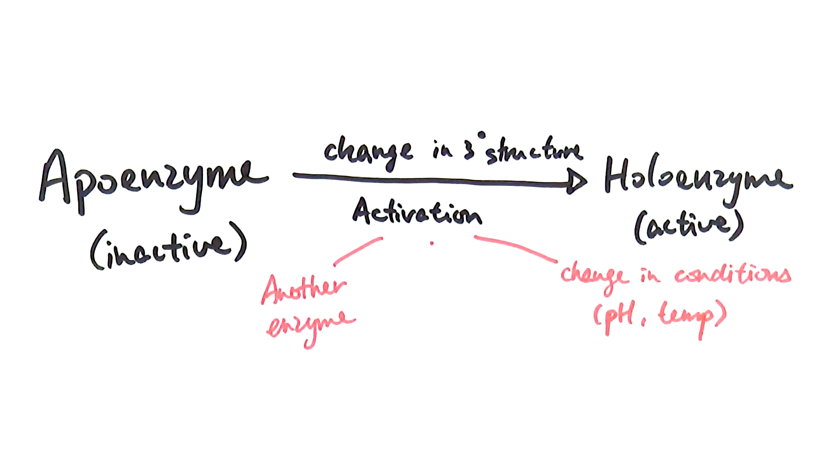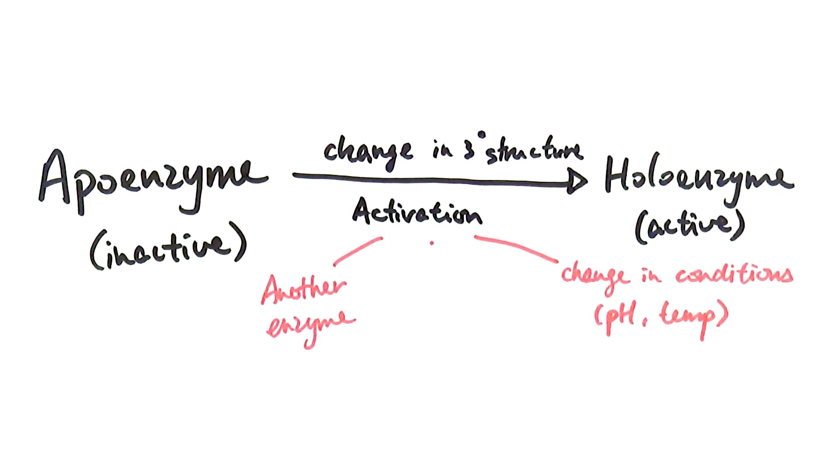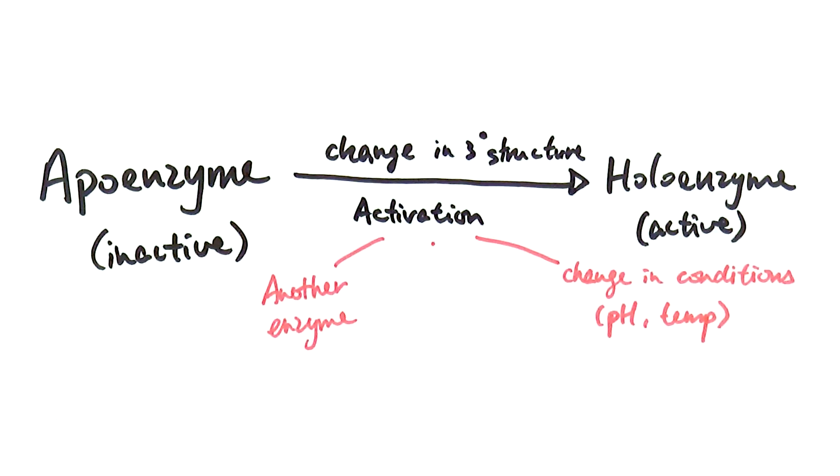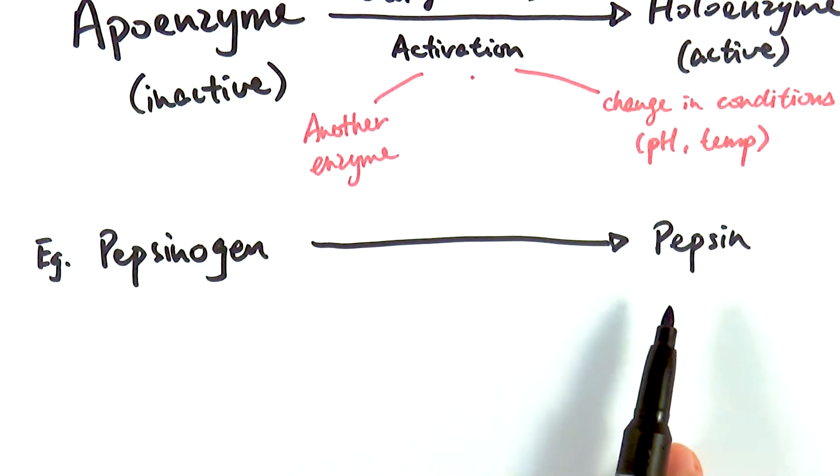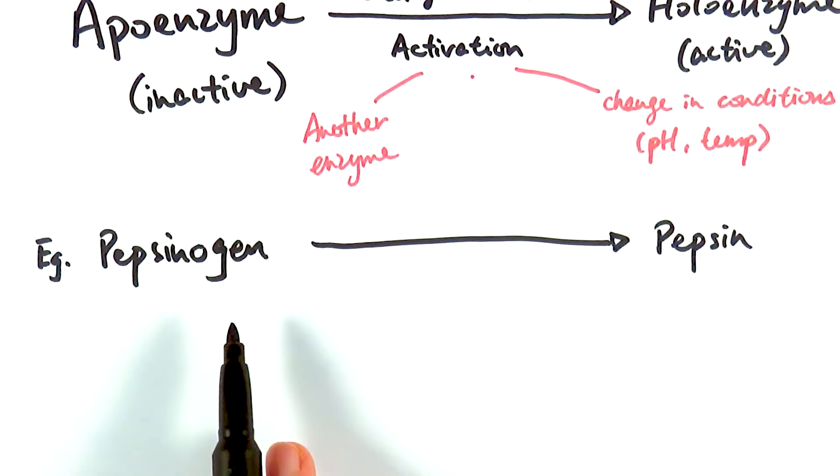Another possible way to activate apoenzymes would be the change in the surrounding conditions. It could be a change in temperature or a change in pH. An example for this is the enzyme called pepsin and pepsinogen. Pepsin is actually an enzyme that is found in the stomach. It is a type of protease that breaks down the proteins in our food into amino acids. But it is not made in the form of pepsin. It was made in the form of pepsinogen.